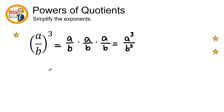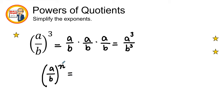There is a general rule: we have a over b raised to the power of n, and what this tells us is that the n is going to be distributed to the numerator — the exponent, which has a little imaginary one — and to the denominator as well. So we'll have a raised to the nth power over b raised to the nth power.